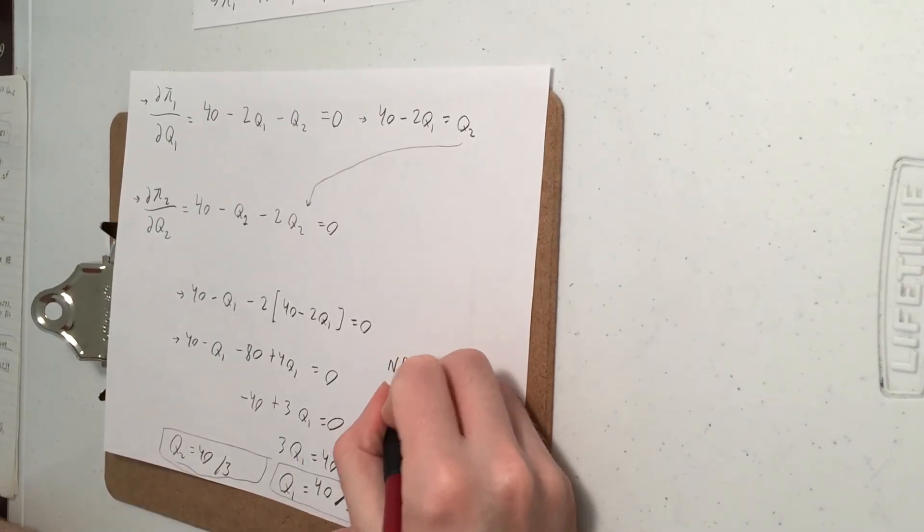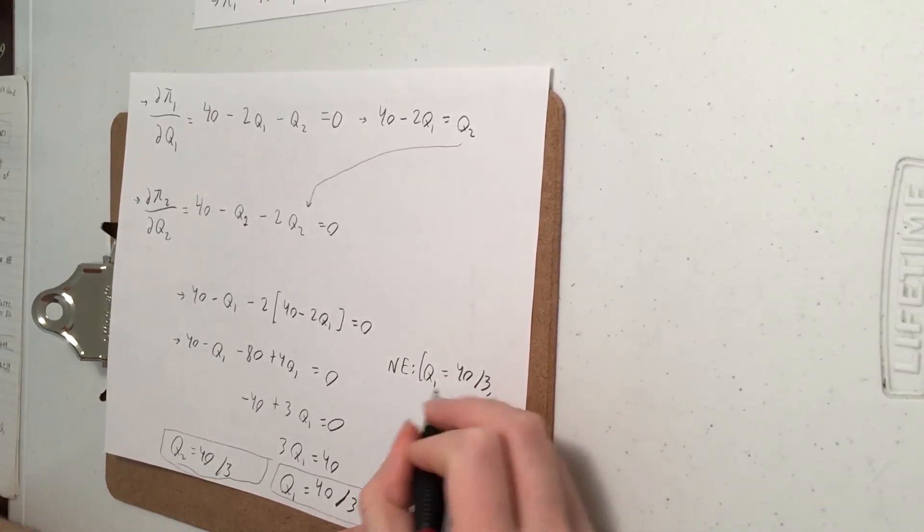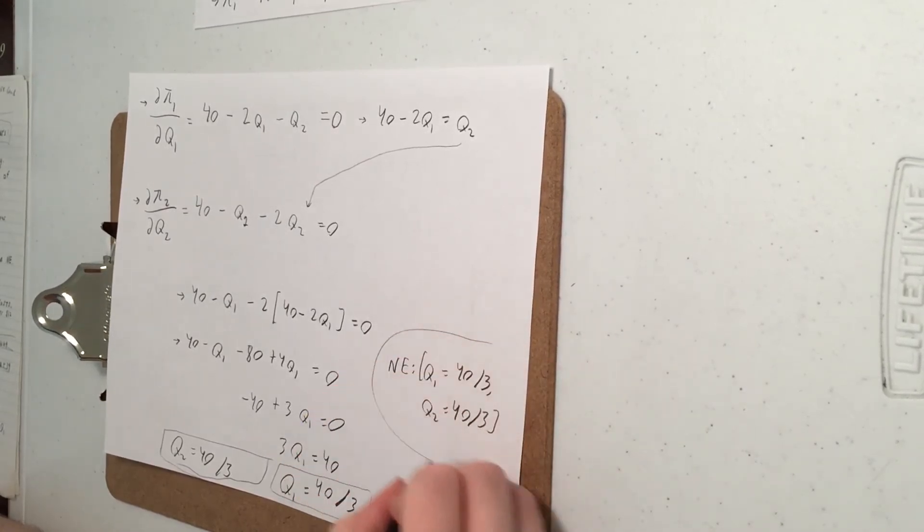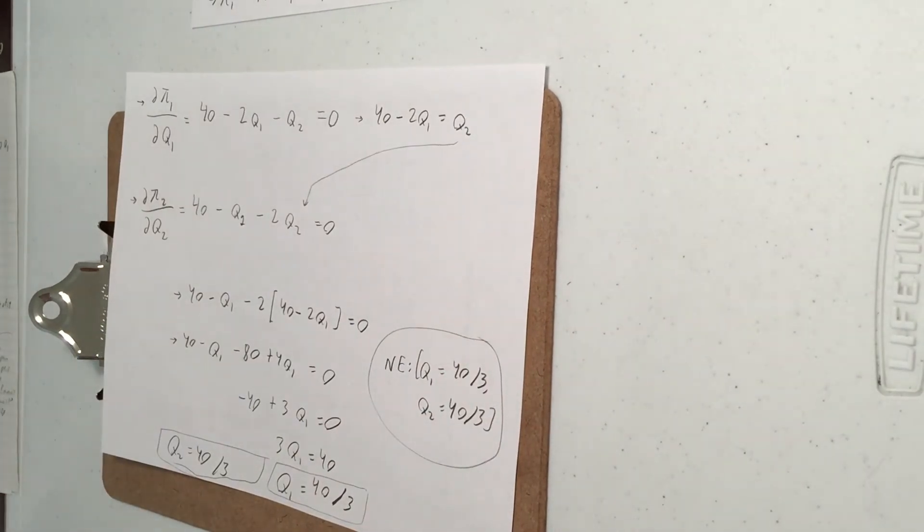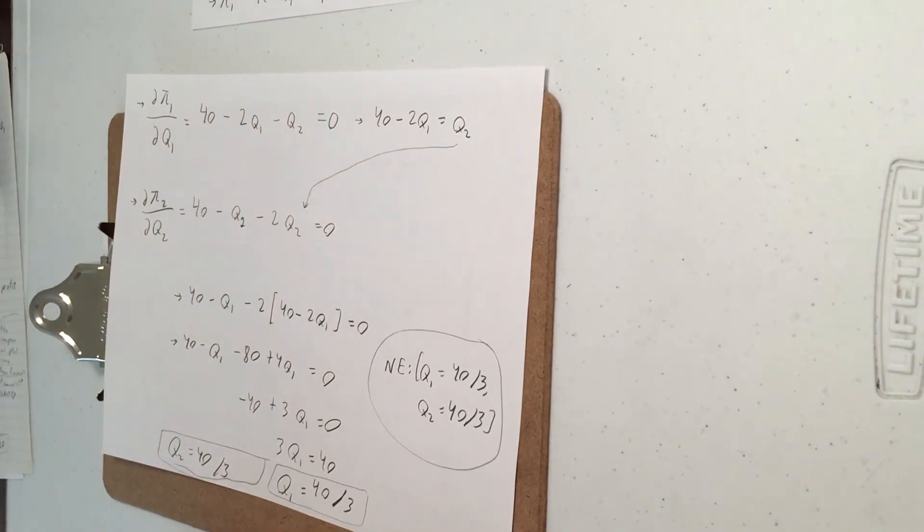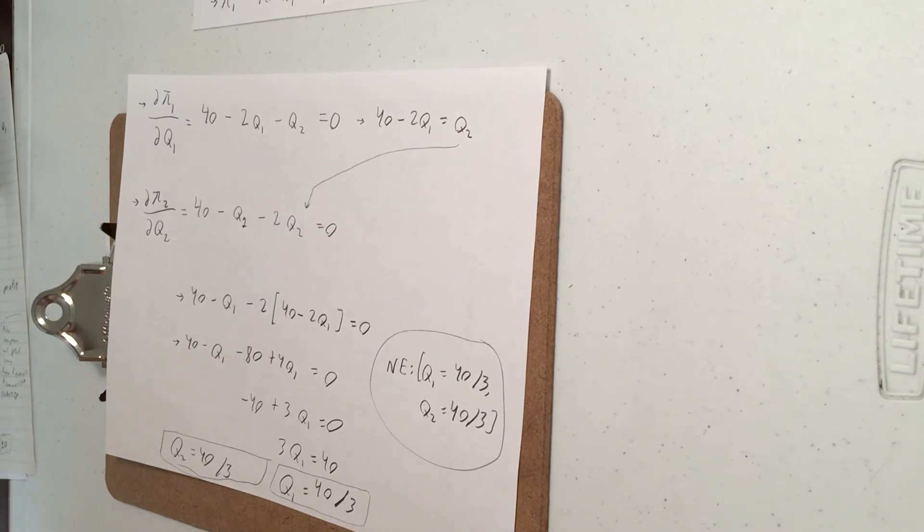So that's our Nash equilibrium. Let's just write out formally. So to develop our economic intuition further, we can also compare this oligopoly outcome with just two firms, this duopoly, to other scenarios. We compare it to perfect competition and also compare it to the monopoly outcome.